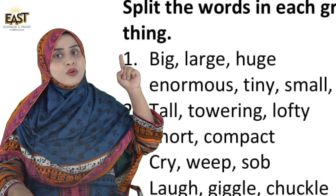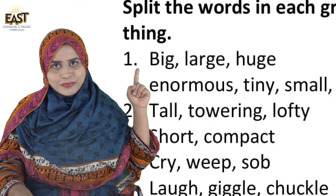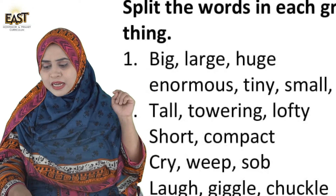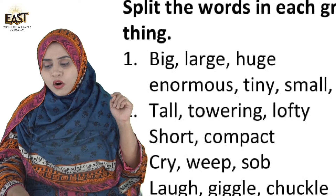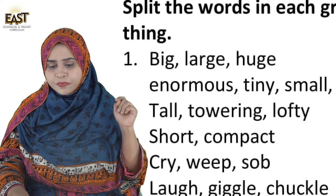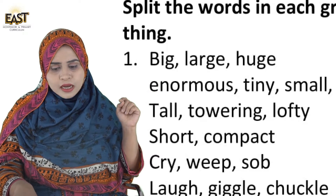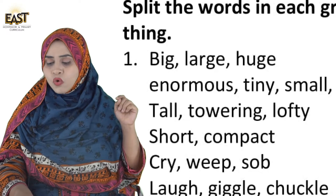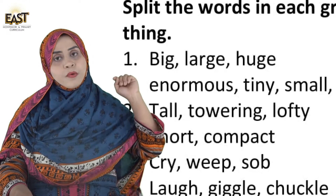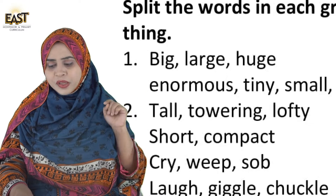Now we have the next word: 'Huge'. Huge ki kya meaning hoti hai? Bada — so we write it in Group 1. Then we have 'Enormous'. Enormous kahan par jaata hai hamara? Of course, Group 1 mein.